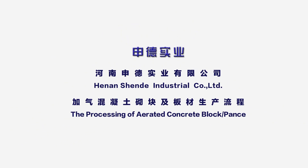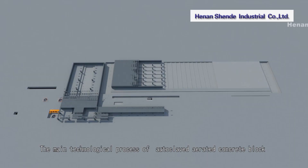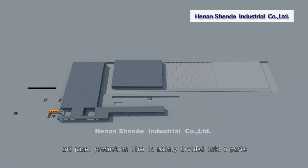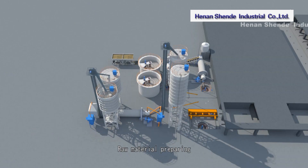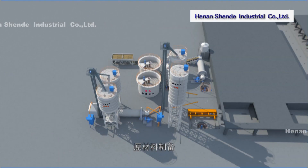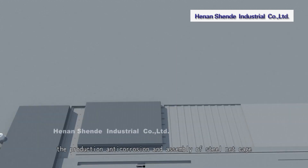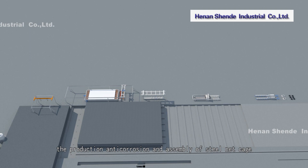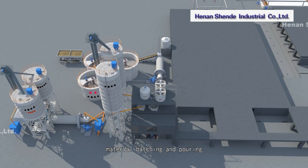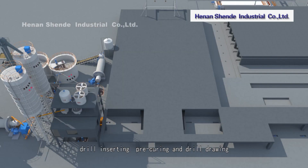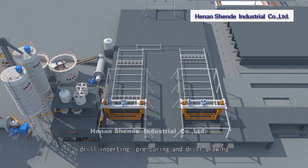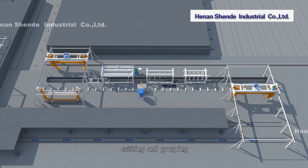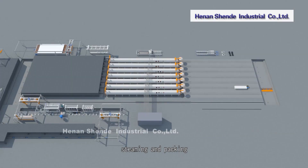The main technological process of autoclaved aerated concrete block and panel production line is mainly divided into six parts: raw material preparing; the production, anti-corrosion and assembly of steel net cage; material batching and pouring; drill inserting, pre-curing and drill drawing; cutting and grouping; and steaming and packing.